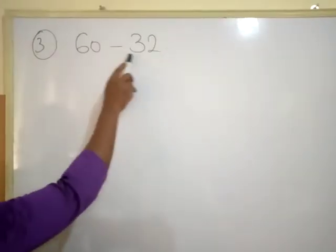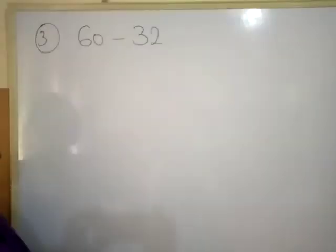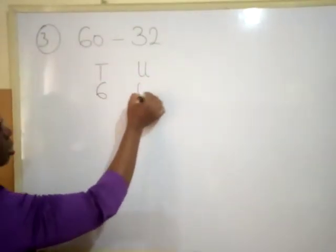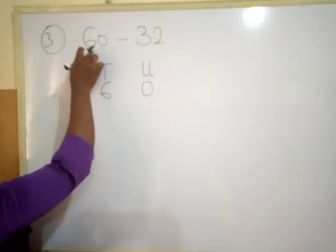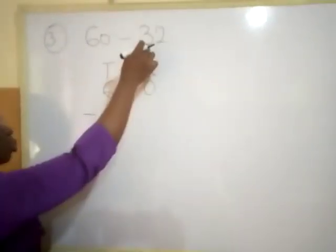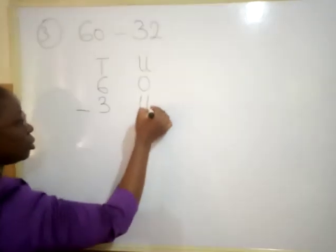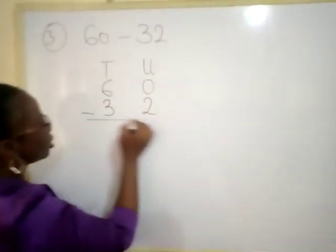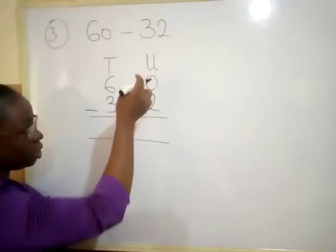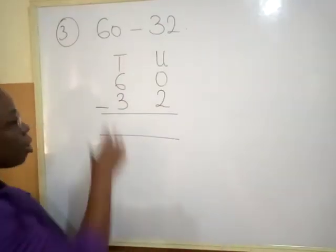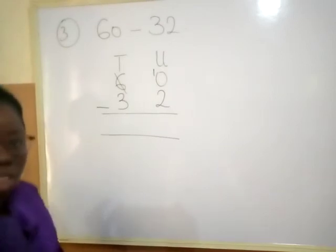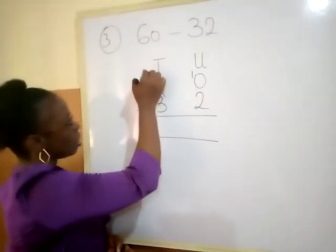Example three: sixty minus thirty-two. Sixty take away thirty-two. We'll go ahead to arrange tens and units. In sixty, I have six tens and zero units — that's why I have my six under tens and my zero under units. Thirty-two is three tens, two units. Zero take away two is impossible — I cannot count zero and take away two. So I'll borrow. Come to this six to borrow. I'll put it here — this becomes ten. This is six, I'll borrow one. The number before six is five, so six minus one gives me five.